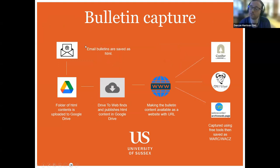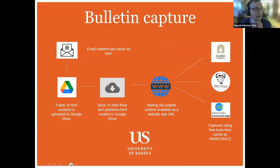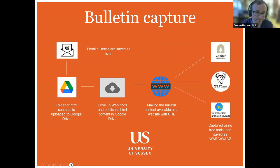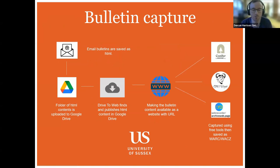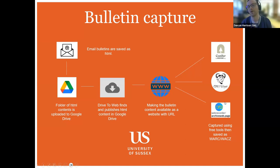Quick overview: email bulletins arrive, I immediately save them as HTML content, package those files into a folder, move them to Google Drive, and push them to a URL published via Drive to Web. I then have the bulletin content available as a URL I can view online through a browser, and using any of the three tools mentioned, I'm able to capture that content. Web Recorder also has some really interesting indexing functions producing extra metadata, wrapped up in a WARC file—sometimes I use a combination of tools and patch it together with Web Recorder to gain that indexing.